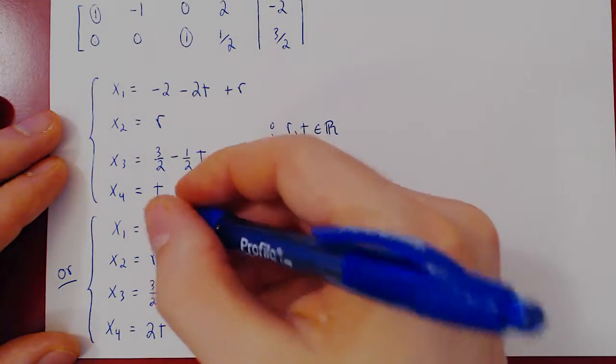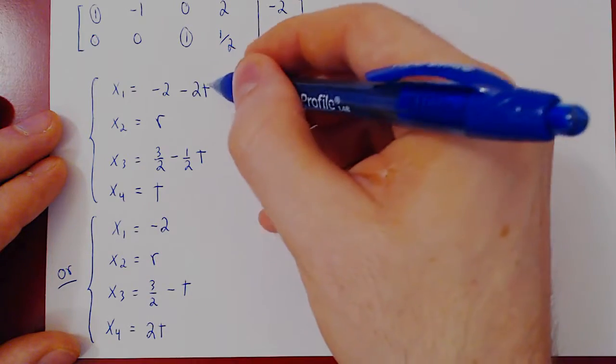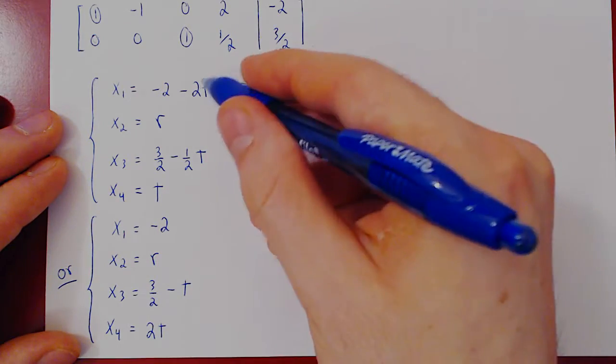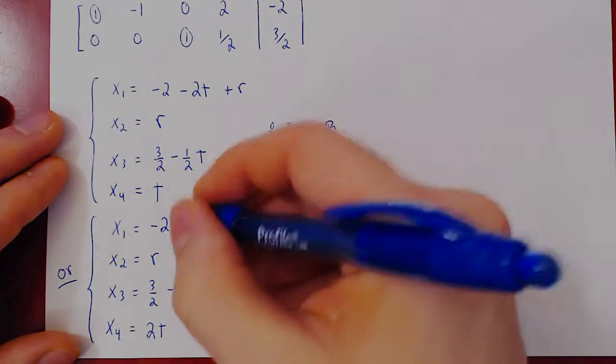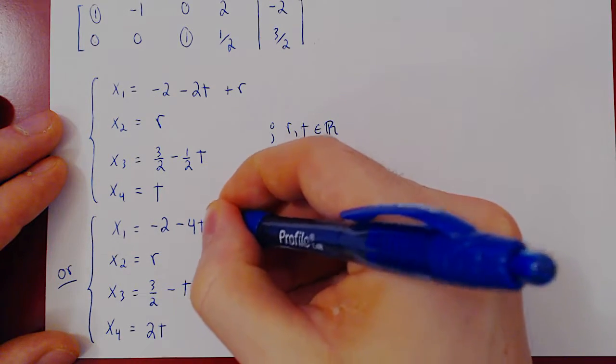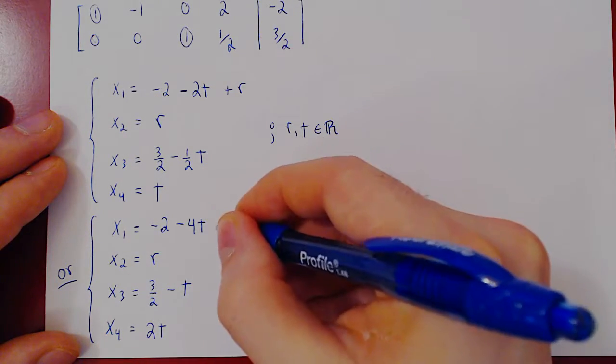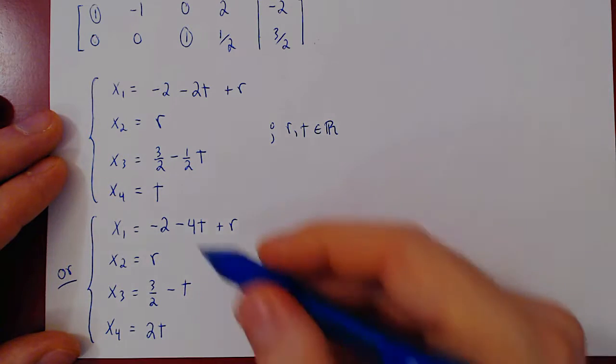Then x1 is minus 2. Minus 2 times, well, we have replaced t by 2t. So minus 2 times 2t, minus 4t, plus r, which stays r. And there you have it.